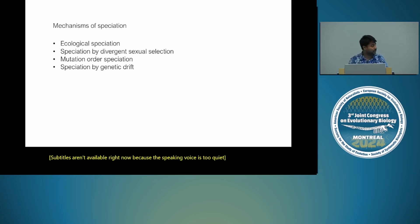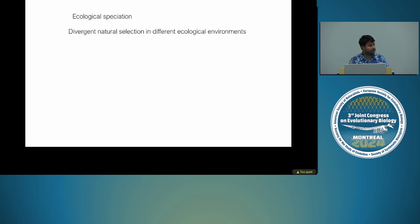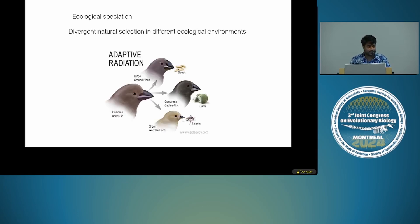I'll be mostly talking about the first two mechanisms today. One really well-supported mechanism of speciation is ecological speciation, which states that reproductive isolation evolves as a byproduct of divergent natural selection in different ecological environments. A poster child is Darwin's finches, where selection on different food sources changed beak shapes, which ultimately affected singing traits and reproductive isolation between species.